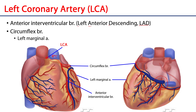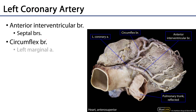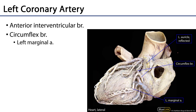One branch off the circumflex is the left marginal branch, which hugs the left border of the heart. Curiously, of all the branches of the coronary arteries, the left marginal is the only one designated as an artery rather than a branch. Looking at the cadaveric photos: there's the origin of the LCA with a very early split for the anterior interventricular branch, then the circumflex branch wrapping around, and there is the left marginal artery.